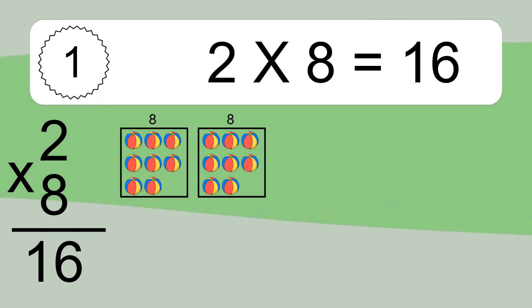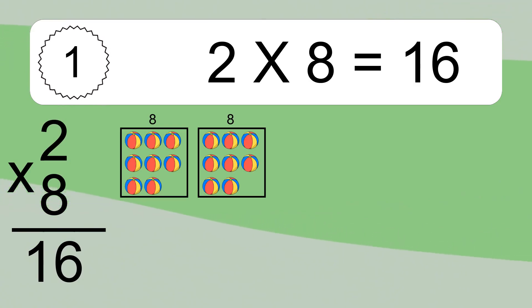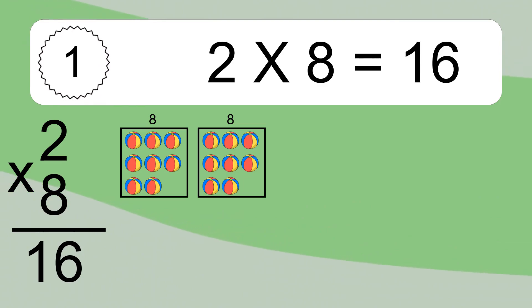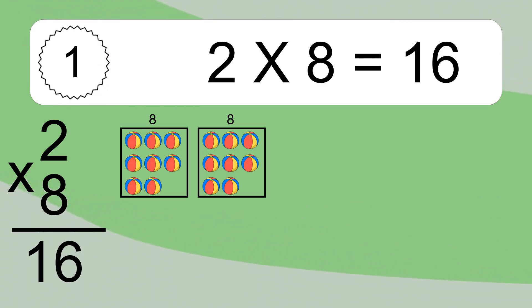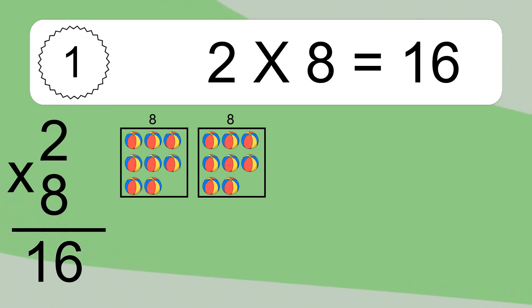We have 2 boxes, and each box has 8 colorful balls inside. If you count all the balls in all the boxes together, you will have 2 times 8 balls. This equals 16 balls.